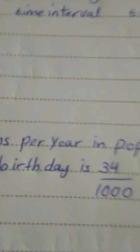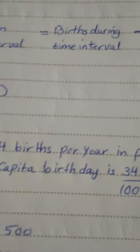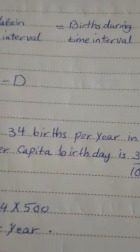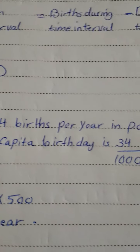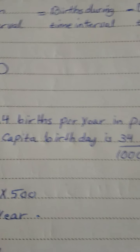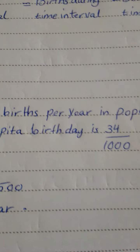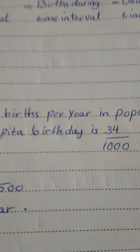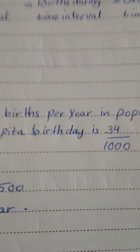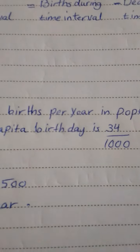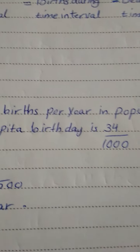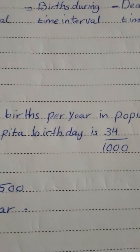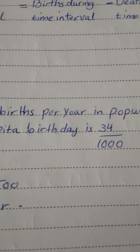Per capita rate of increase. Imagine a hypothetical population consisting of a few individuals living in an ideal, unlimited environment. Under these conditions, there are no restrictions on the abilities of individuals to harvest energy, grow, and reproduce, aside from the inherent biological limitations of their life history.